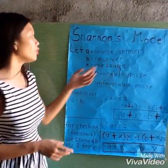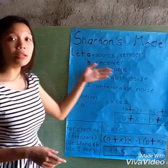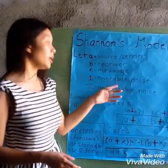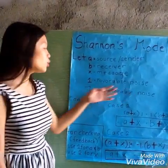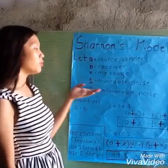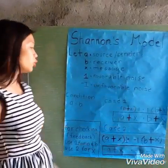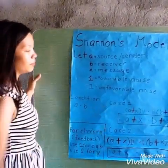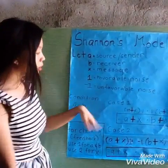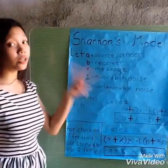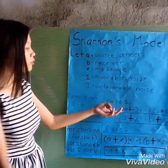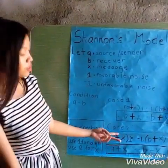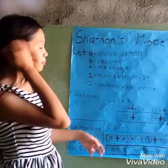Let A be the sender, B be the receiver, X be the message, positive one for favorable noise and negative one for unfavorable noise, and the condition A equals B. We have two cases: case number one for favorable noise, and case number two for unfavorable noise.